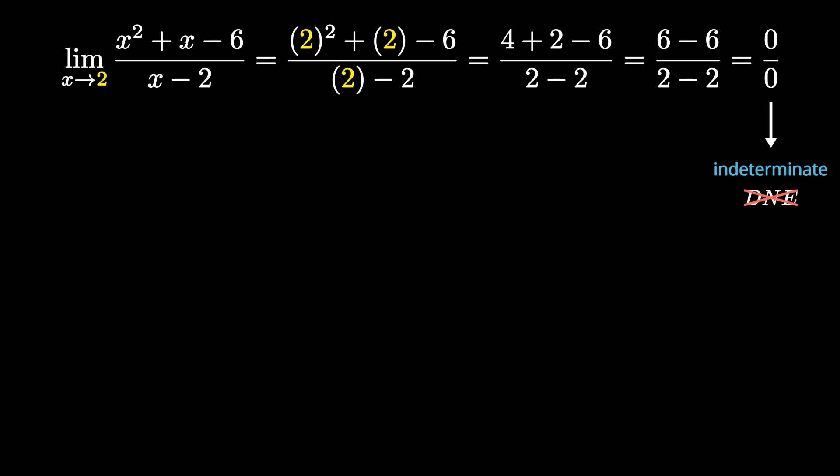It's also important to note that the limit will not be 0. You might think anything divided by itself is 1, so 0 divided by 0 is 1 — but no. It's not going to be DNE, 0, or 1, which is why we call it indeterminate.